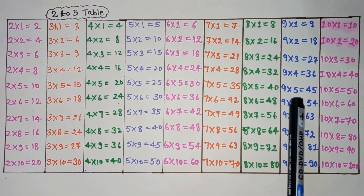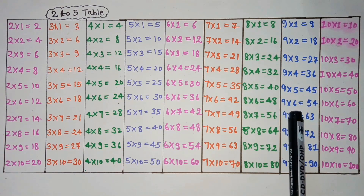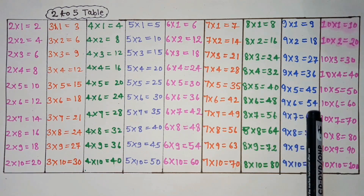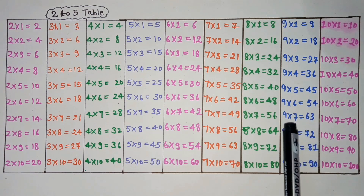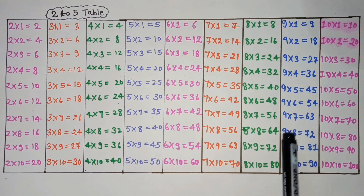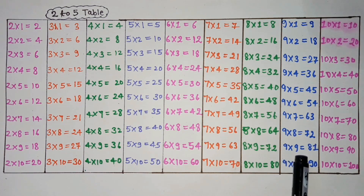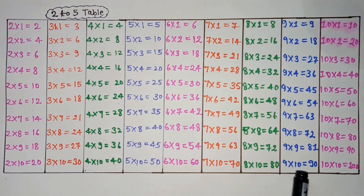9 fives are 45. 9 sixes are 54. 9 sevens are 63. 9 eights are 72. 9 nines are 81. 9 tens are 90.